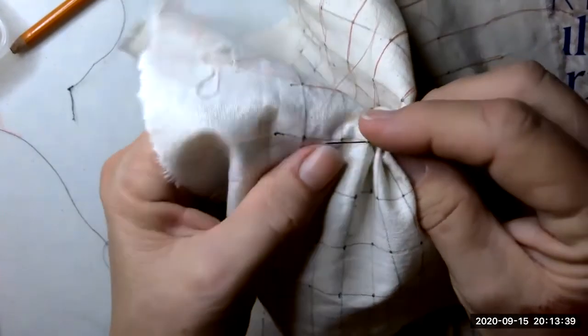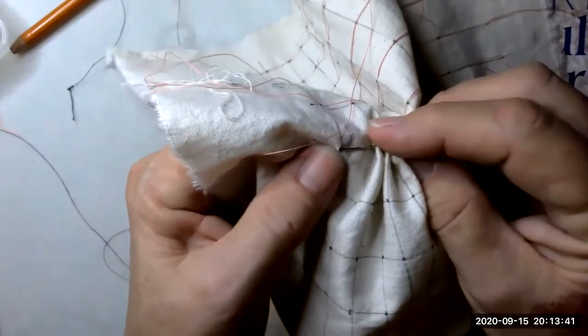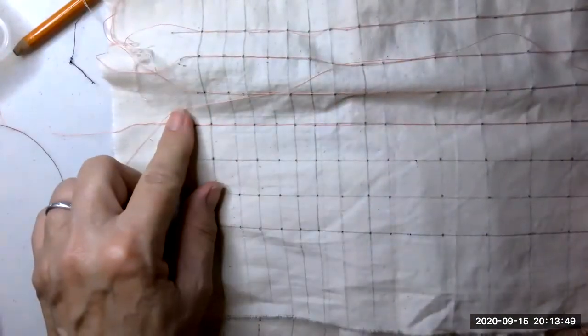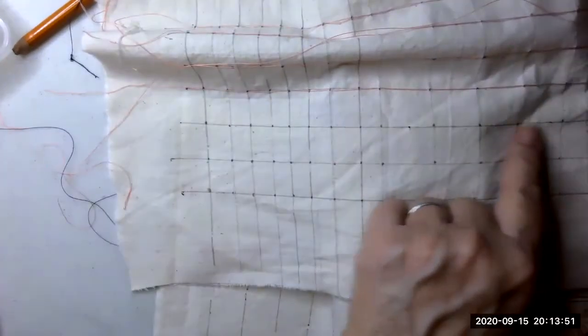So what I'm really doing is gathering on my needle until I reach the end, and then I'm going to draw my thread all the way through. I just took it off the needle and that's one row completed.